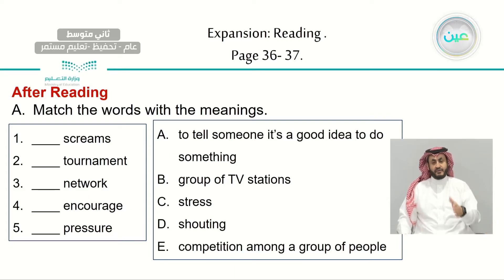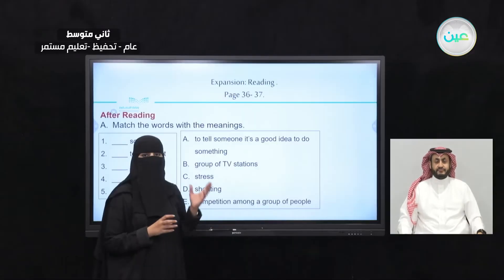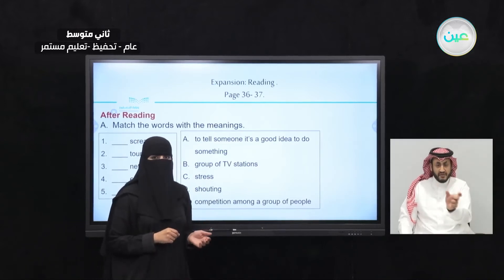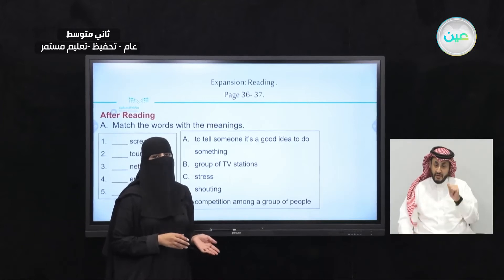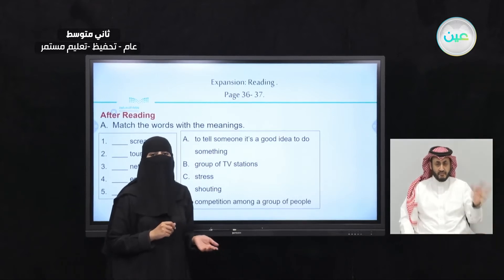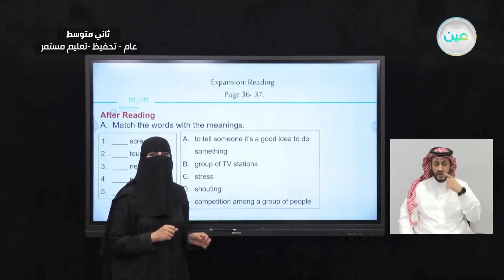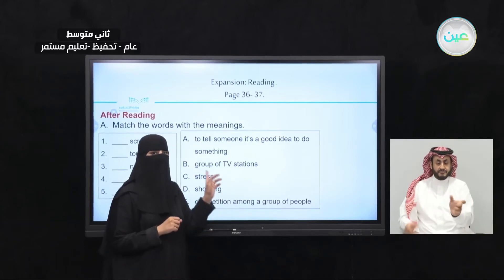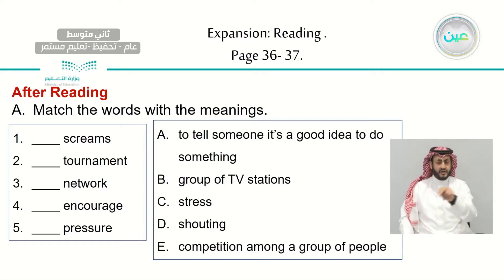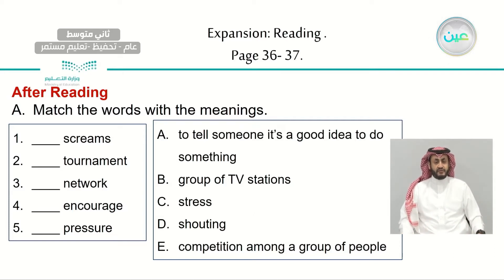After reading this text and looking at the highlighted words, did you find their meanings? If not, that's okay — you can underline the words you didn't know and look them up later. Now we have some vocabulary. Let's match this box of vocabulary to the meanings in the other box. The vocabularies are: screams, tournament, network, encourage, and pressure.